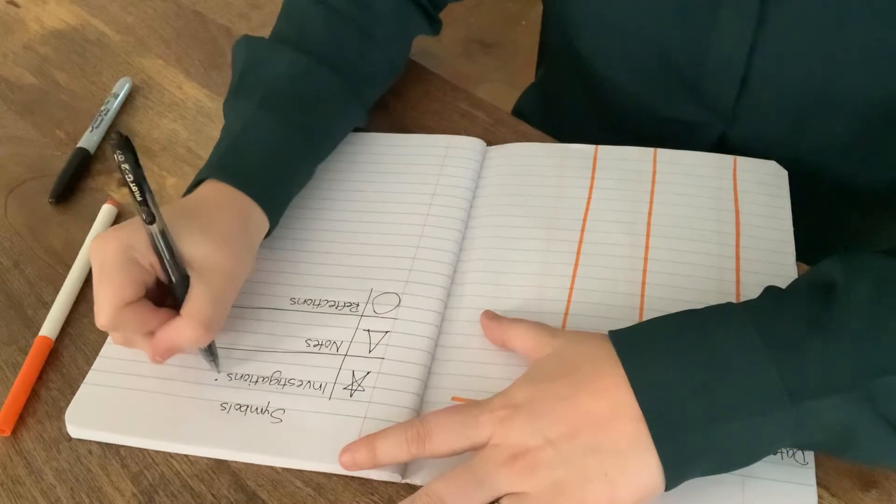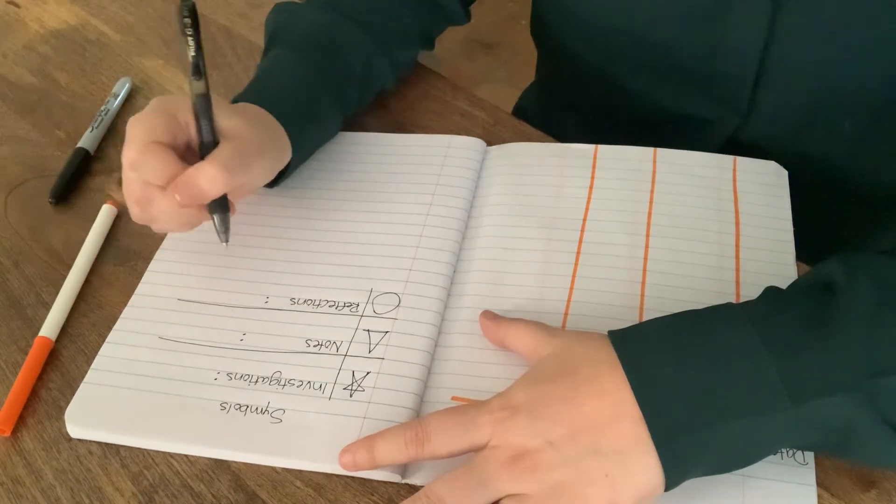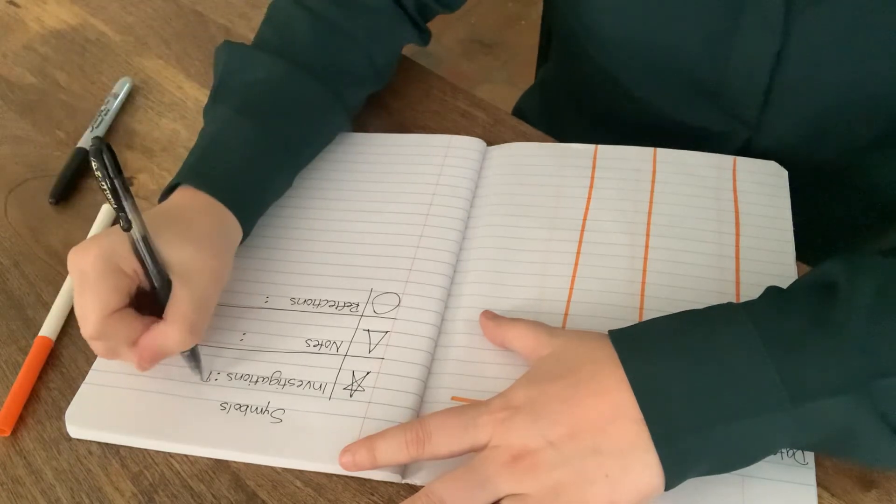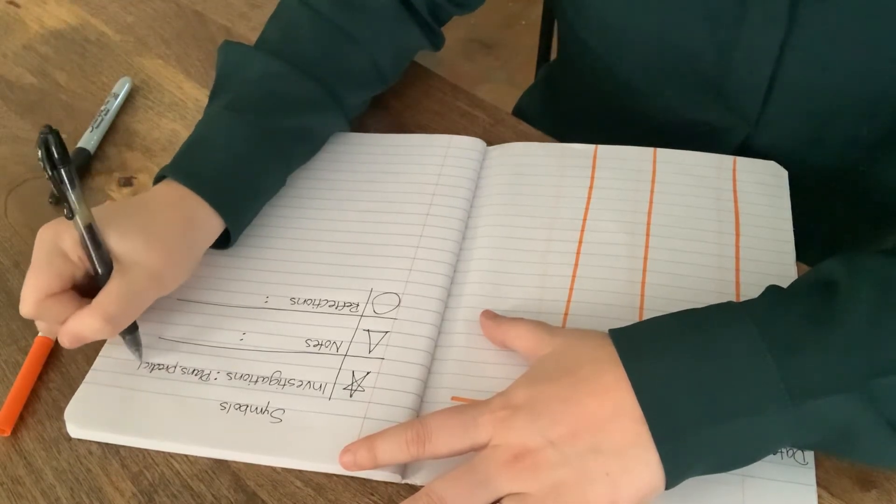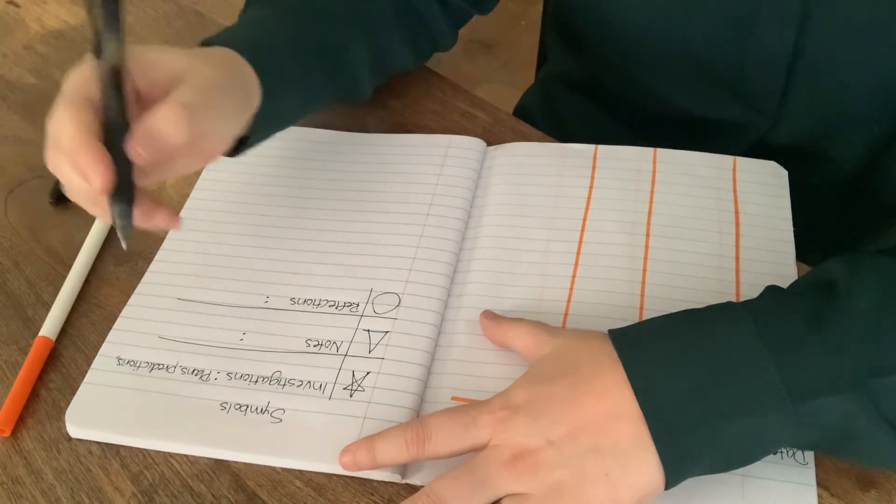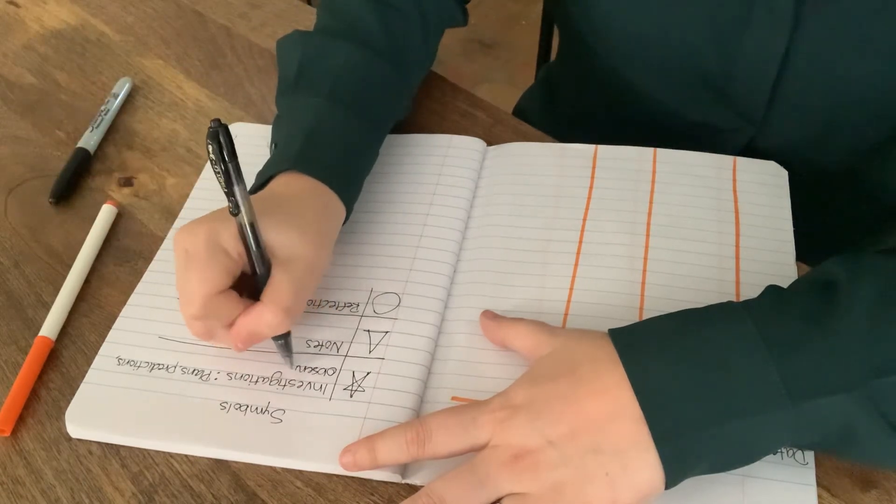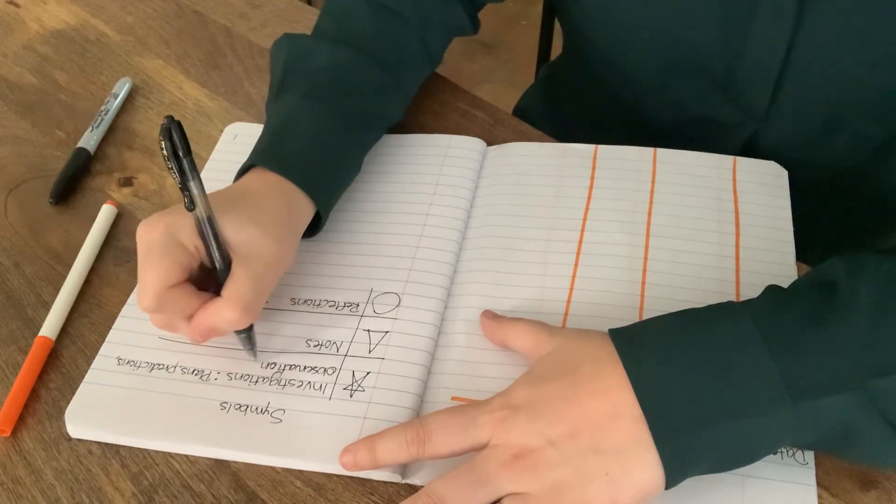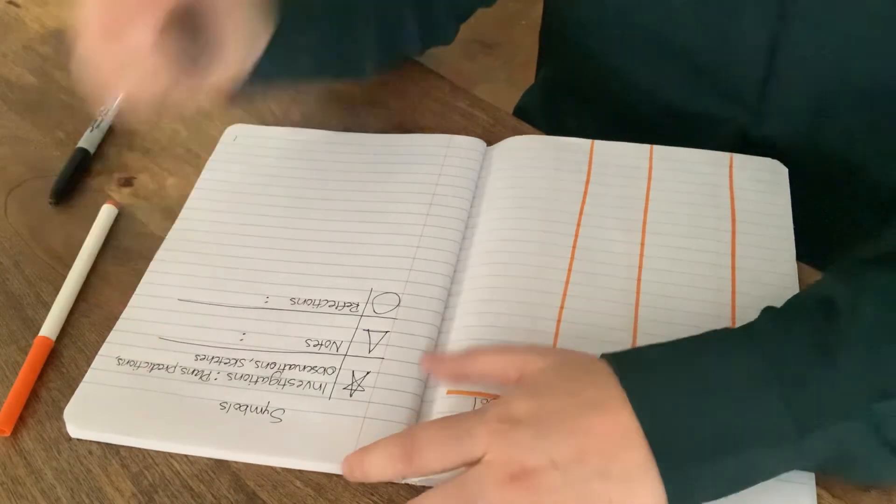Now, what do these each mean? All right. When we are writing an entry of an investigation, these are your plans, predictions, observations, and sketches.